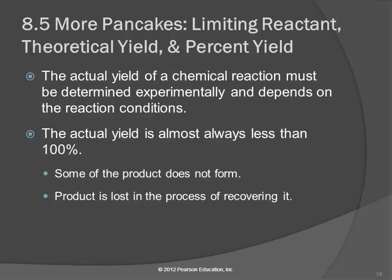When we give you problems on a test or in the homework, the actual yield will be given to you. In a lab situation, the actual yield is the amount of product you actually come up with. The theoretical yield is always calculated — usually from the balanced chemical equation using stoichiometry. The actual yield is almost always less than 100%, because some product doesn't form or some is lost in the process of recovering it.